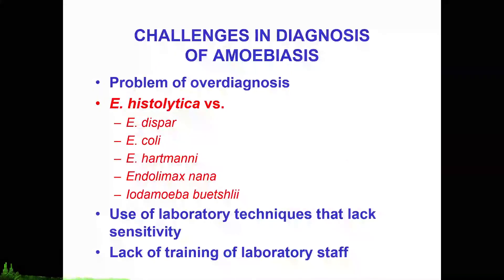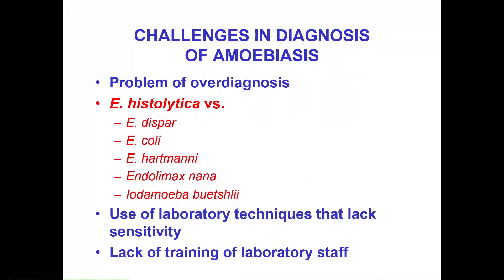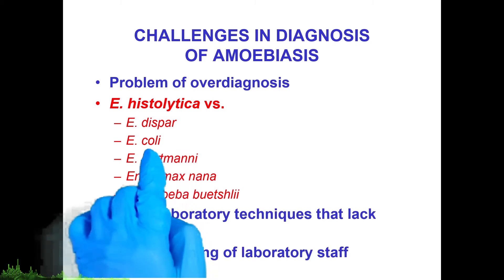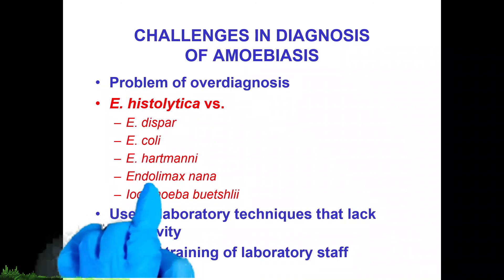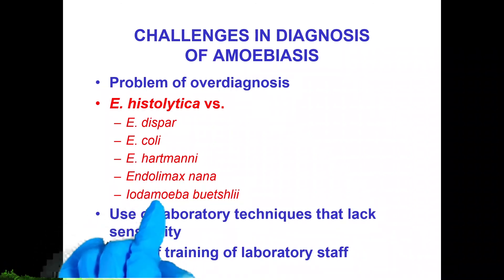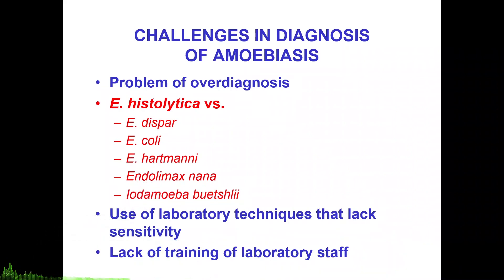The problem of overdiagnosis is very real and a pressing challenge in the proper diagnosis of amoebiasis. Aside from Entamoeba dispar, you also need to differentiate Entamoeba histolytica from other non-pathogenic intestinal protozoans such as Entamoeba coli, Entamoeba hartmanni, Endolimax nana, and Iodamoeba butschlii. These organisms are covered in a separate lecture.